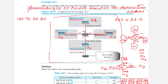Whichever packet the router receives, that packet has some destination address. Based on that destination address, the packet may belong to either N1, N2, N3, or N4. The router must check which network the packet belongs to so it can place it on the correct interface. If by mistake the packet is placed on the wrong interface, it will go to the wrong network and never reach the intended host.